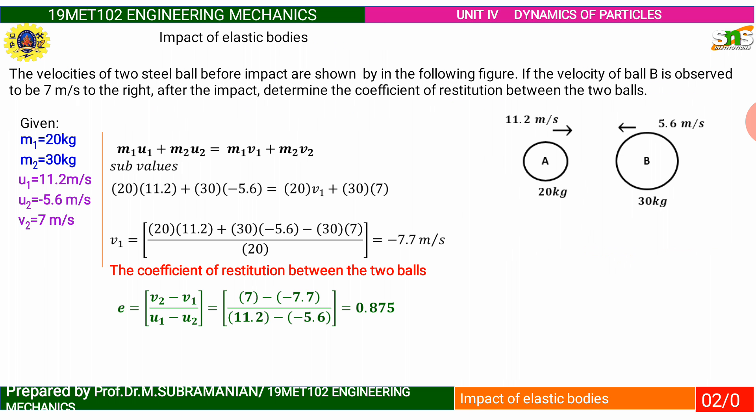From the problem, first write down the given data. Two masses are given. Mass 1 is 20 kg. Mass of the second steel ball is 30 kg. Initial velocity of steel ball 1 is 11.2 meters per second. Then second ball initial velocity is 5.6 meters per second.